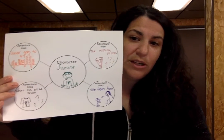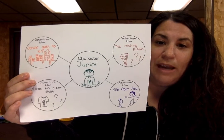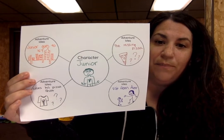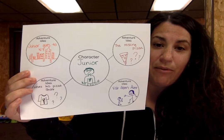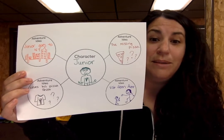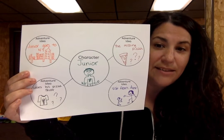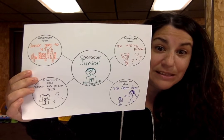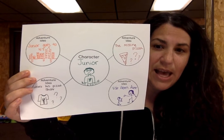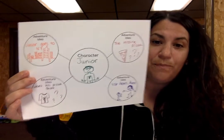So as a reminder, here is my map. Junior, my character, is in the middle, and around him are all my ideas of possible stories I might write: the missing pizza, a visit from his mean aunt, Junior goes to New York City to find the best pizza in the world, and Junior loses his pizza shirt. Those are some of the ideas I came up with.